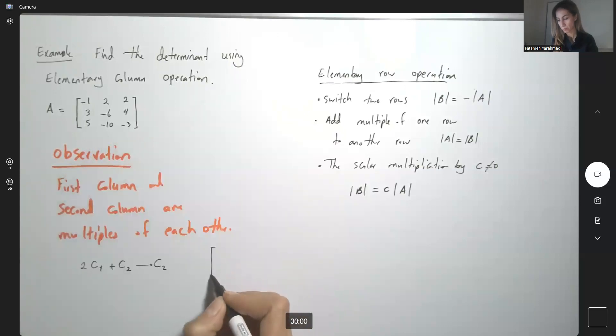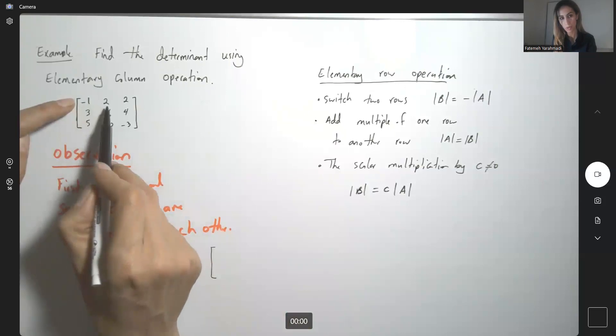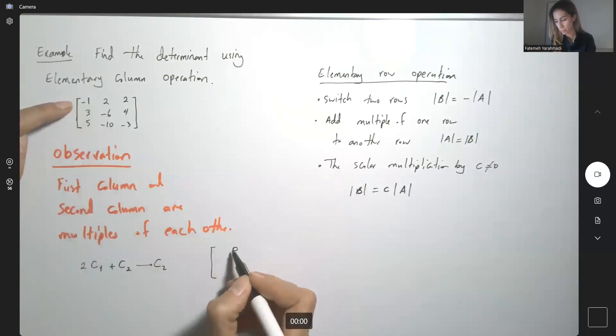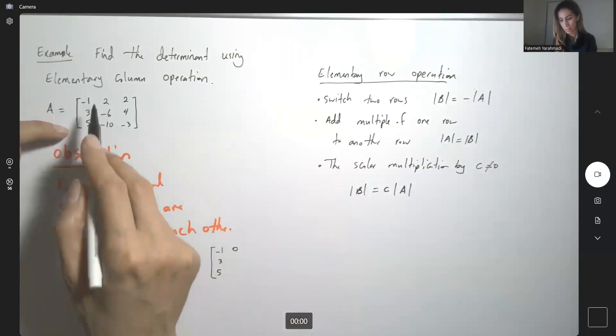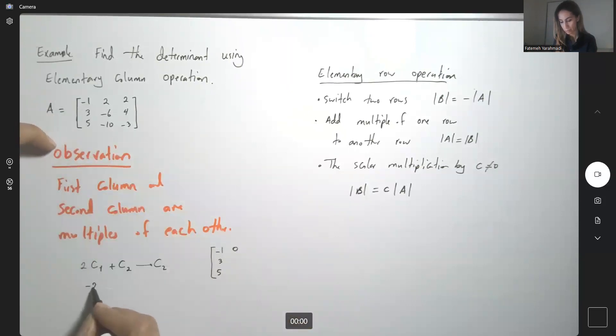This matrix becomes, well, this is negative 1 multiplied by 2 plus 2. This becomes a 0. So you have negative 1, 3, and 5. Multiplying the first column by 2 and adding that to the second column.